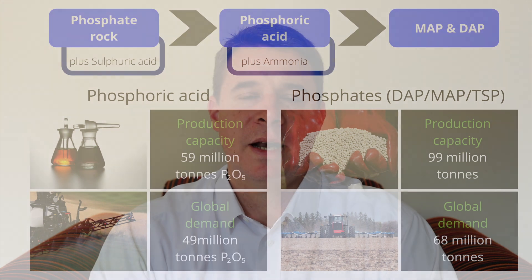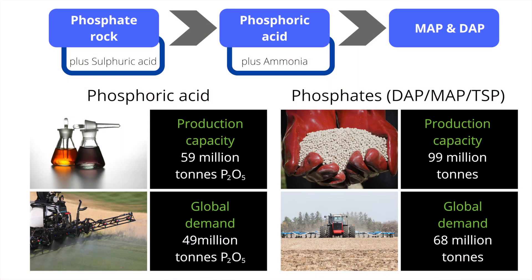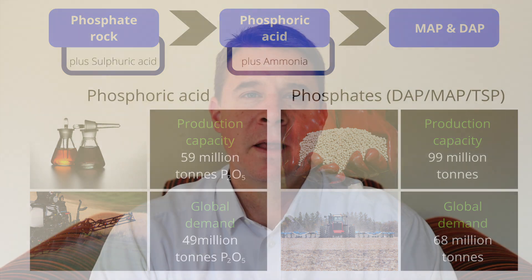The overall phosphate capacity utilization is around 70%. There are a number of reasons why this number looks a little low. These granulation plants typically make a range of different phosphate products — not only MAP and DAP, but sometimes TSP and even NPKs. So the capacity utilization may well be higher if the demand for other products is higher.